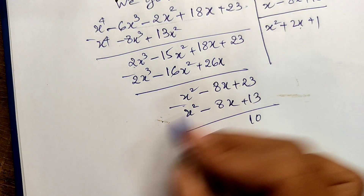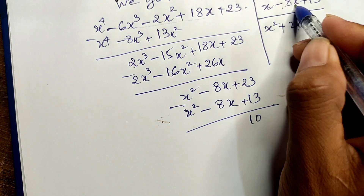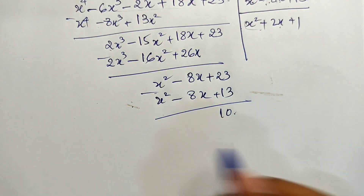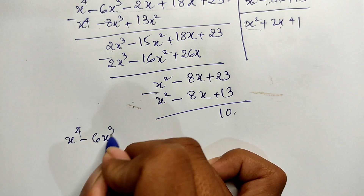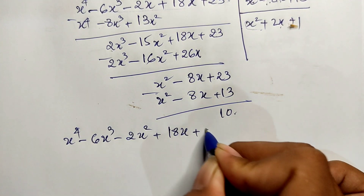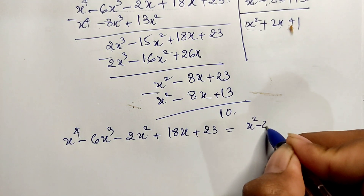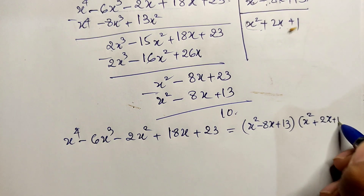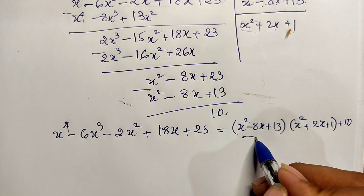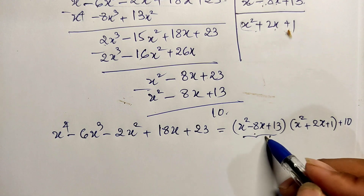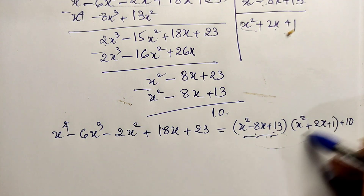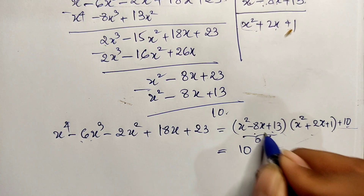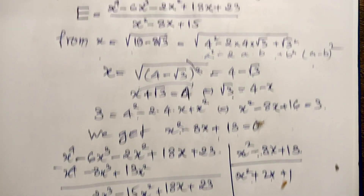Continuing, I get the remainder x² minus 8x plus 13, and then the final remainder is 10. So the numerator x⁴ minus 6x³ minus 2x² plus 18x plus 23 equals (x² minus 8x plus 13) times (x² plus 2x plus 1) plus 10. Since x² minus 8x plus 13 equals 0, that factor is 0, so 0 times anything equals 0.